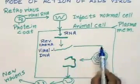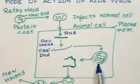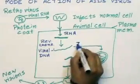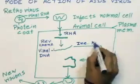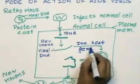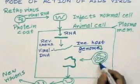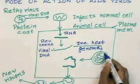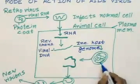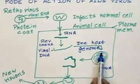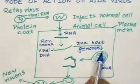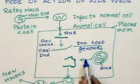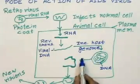The viral DNA is then incorporated into the host genome. This is the nucleus of the host cell, and as the viral DNA incorporates into the host genome, we find that new viral RNA is produced by the infected cell.